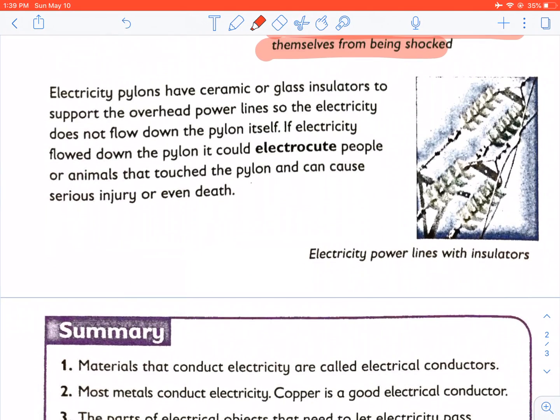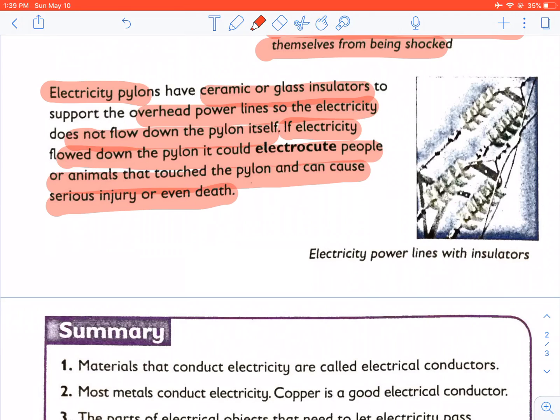Electrical pylons have ceramic or glass insulators to support the overhead power lines so that the electricity does not flow down the pylon itself. If electricity flows down the pylon, it could electrocute people or animals that touch the pylon and can cause serious injury or even death.